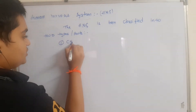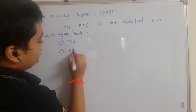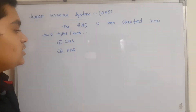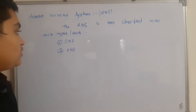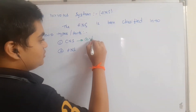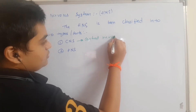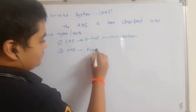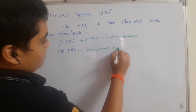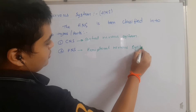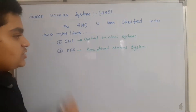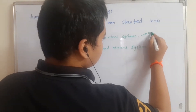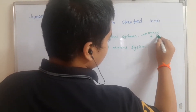The first part is called CNS and the second part is called PNS. CNS is the Central Nervous System and PNS is the Peripheral Nervous System. CNS includes the Brain and Spinal Cord.